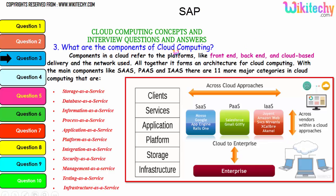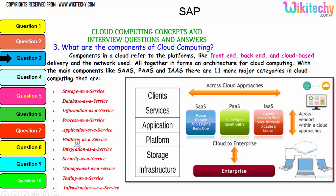Now let's talk about the components of cloud computing. Components in a cloud refer to platforms like front-end, back-end, cloud-based delivery, and the network used. Altogether, it forms an architecture for cloud computing. With the main components being software as a service, platform as a service, and infrastructure as a service, there are 11 major categories in cloud: storage as a service, database as a service, information as a service, process as a service, application, platform, integration, security, management, testing, and finally infrastructure.